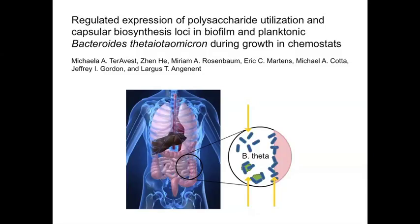Attaching to surfaces in the gut may give B-theta an advantage by increasing accessibility of carbon sources and increasing its retention time in the gut. Whether a bacterium attaches to a surface can change its physiology dramatically, but it is difficult to study these attached communities in vivo.